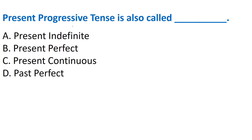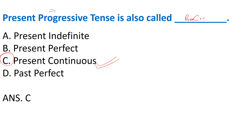Next question: 'Present progressive tense is also called...' Present progressive means a work that is currently in progress. Options: A) Present indefinite, B) Present perfect, C) Present continuous, D) Past perfect. The correct answer is Option C - present continuous. Present continuous tense is also known as present progressive tense.